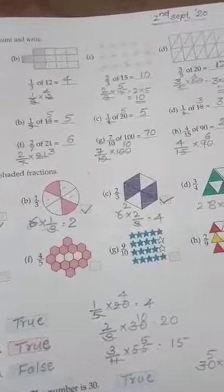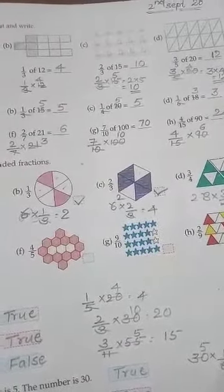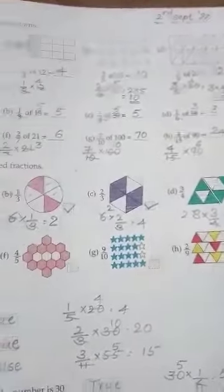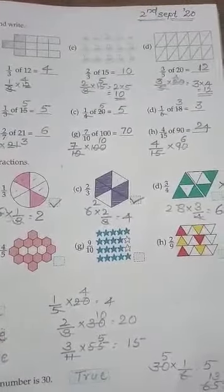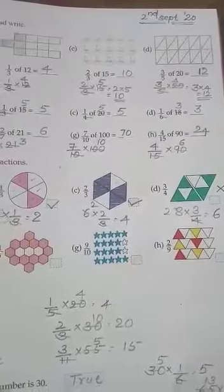Next one, 2 by 3 of 15. So you have to find out 2 by 3 of 15, you will get 10. So you have to color any 10 portions given in the picture. And next one, 3 by 5 of 20. 3 by 5 of 20, when we calculate it will become 12. And you have to color 12 parts of the given picture.